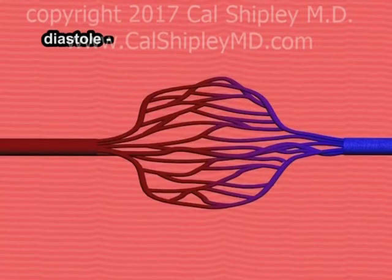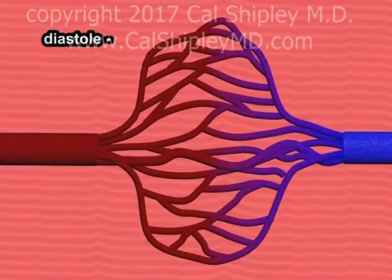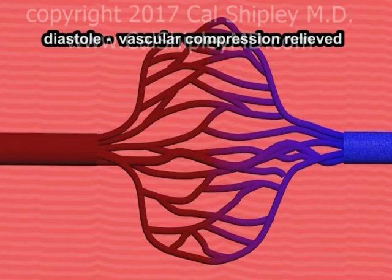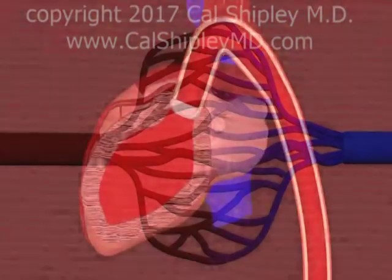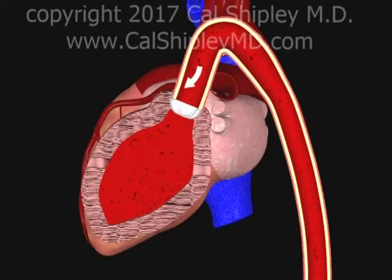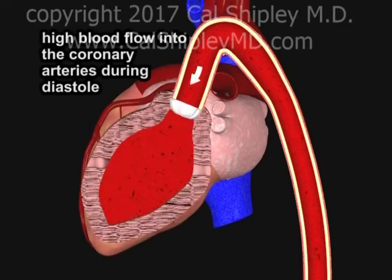During diastole, the myocardium relaxes and the compression of the vascular structures is relieved. The blood pressure in the aortic root is now greater than that of the coronaries, and blood flows freely into the ostia and through the coronary system.